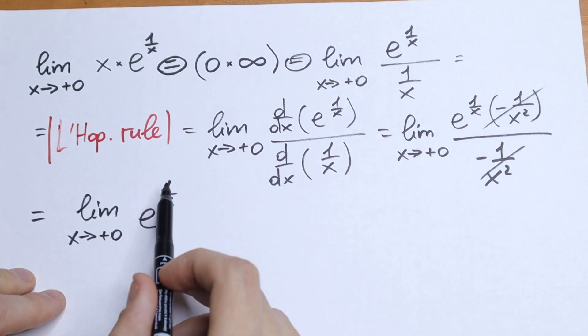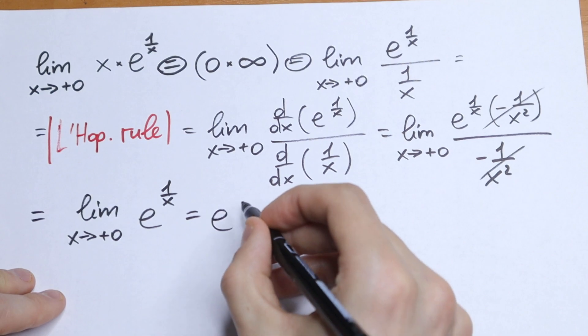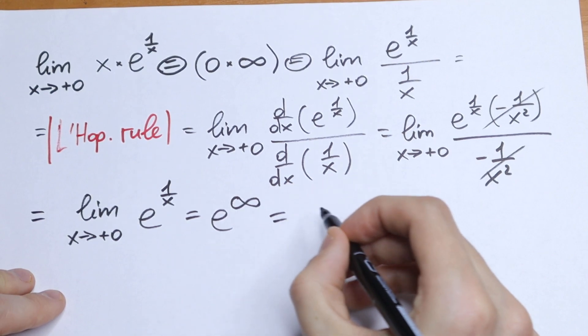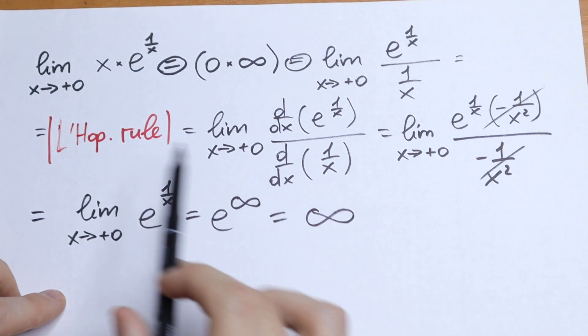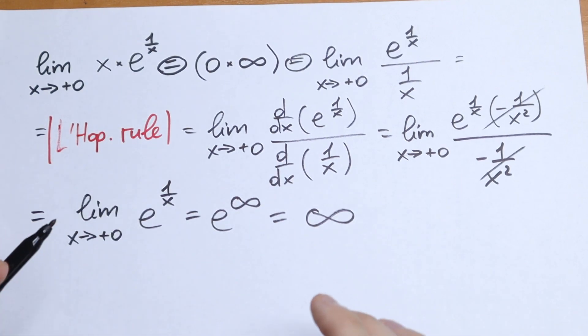And if we plug in 0 we will have 1 over 0 will be infinity. And as a result we will have e to the power infinity which is equal to infinity. So our limit is equal to infinity. And this is our answer.